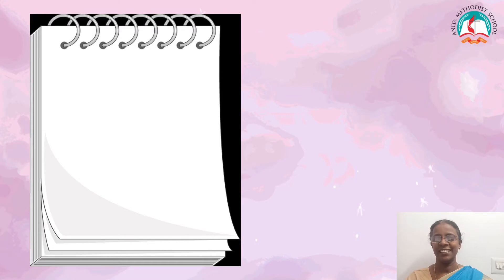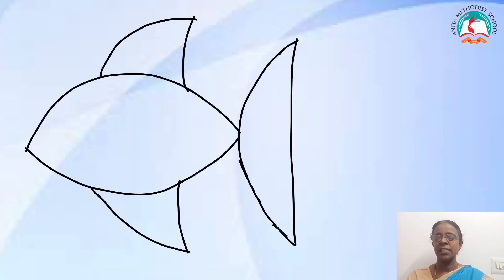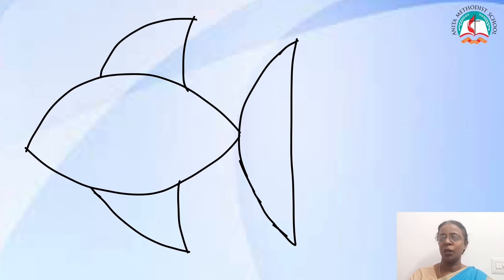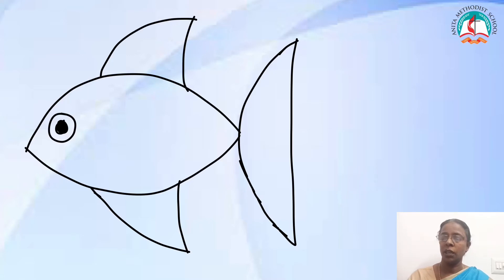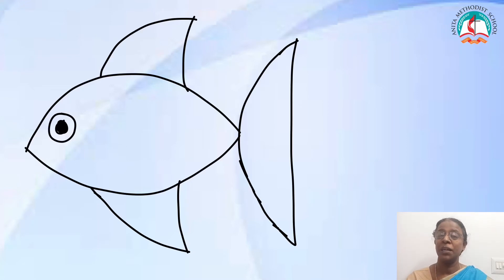To draw this art, first take a paper and a pencil. The first step is to draw a fish outline like this. You all know how to draw a fish with fins. Now draw a round eye on the front side.